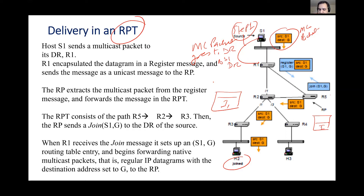Step two: the DR of the source makes a Register packet, shown in blue. The Register packet encapsulates the yellow multicast packet into itself, and the Designated Router sends this Register packet to the Rendezvous Point.